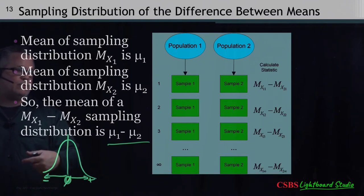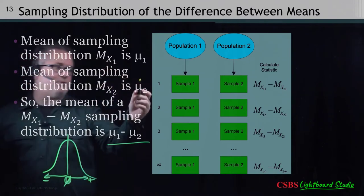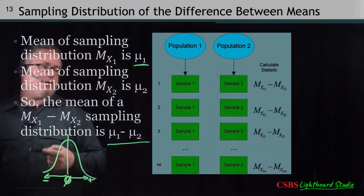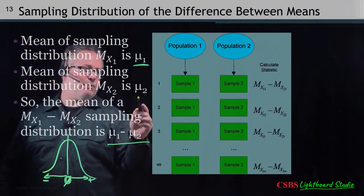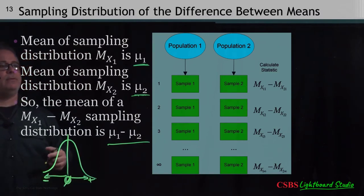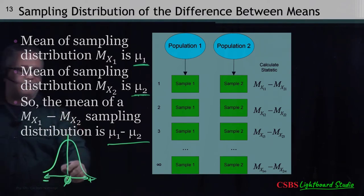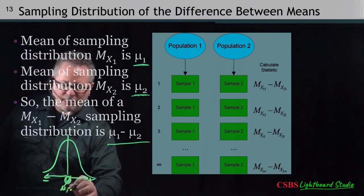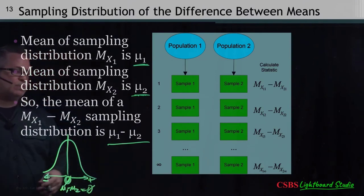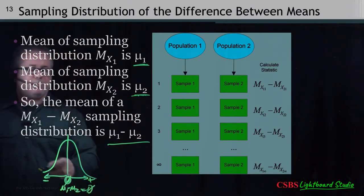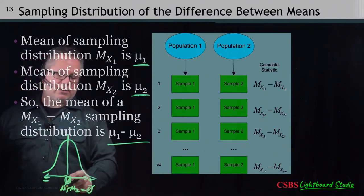Under the null hypothesis, the distribution centers around the assumed population difference — often zero. We need to figure out the standard error: how much we would expect the differences to vary, and what range of values we'd expect. By doing this a large number of times, we get a full distribution showing how often we get extreme scores, which lets us determine where to draw the cutoff for an unusual difference between two samples.